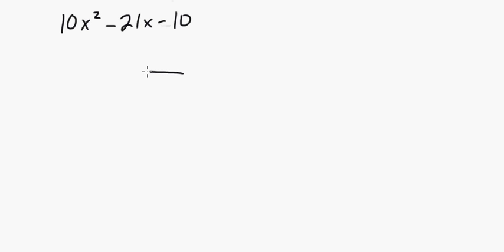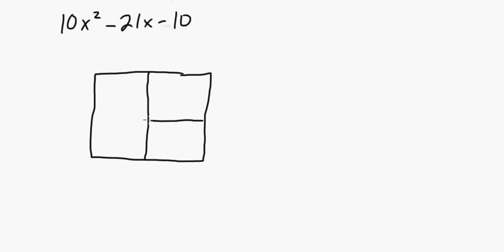We have 10x² - 21x - 10. So when you see that, you immediately draw your box. You put 10x² here, you put -10 here. Let's multiply 10 × -10 = -100. Now we need to come up with two factors that multiply to equal -100 and add to equal -21.